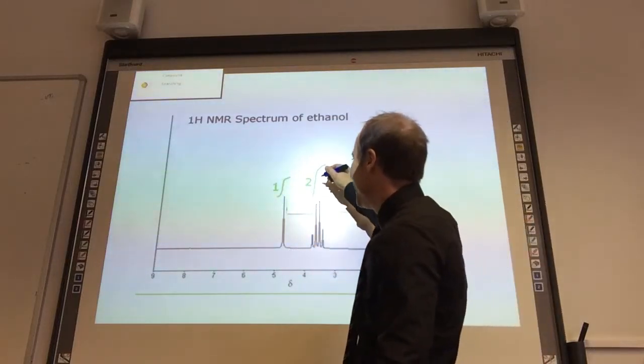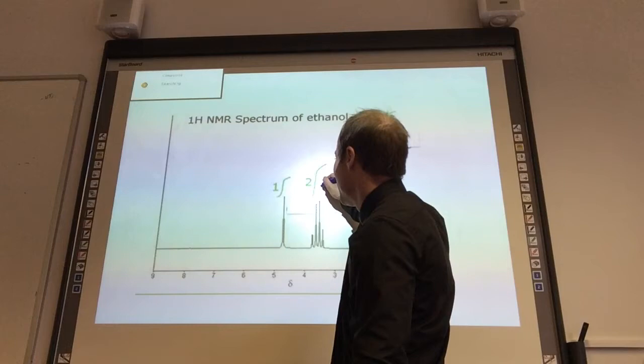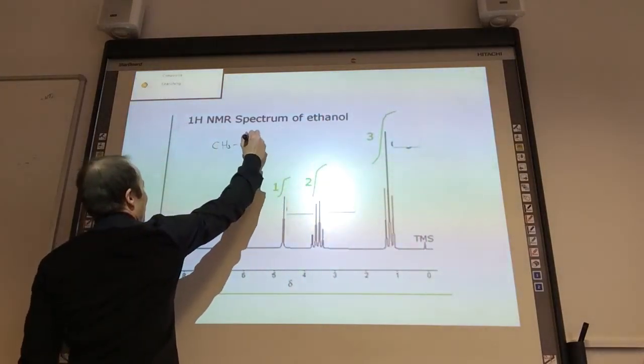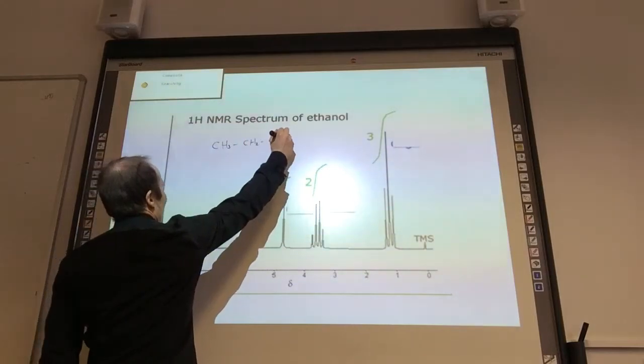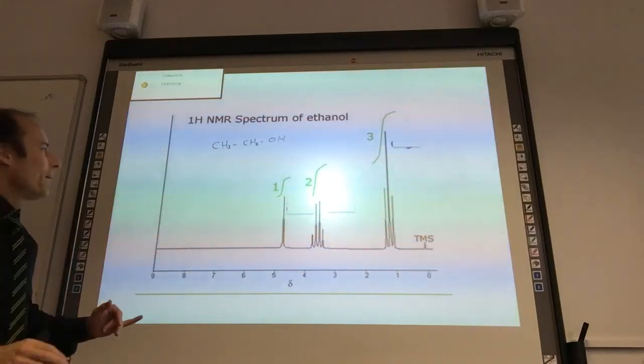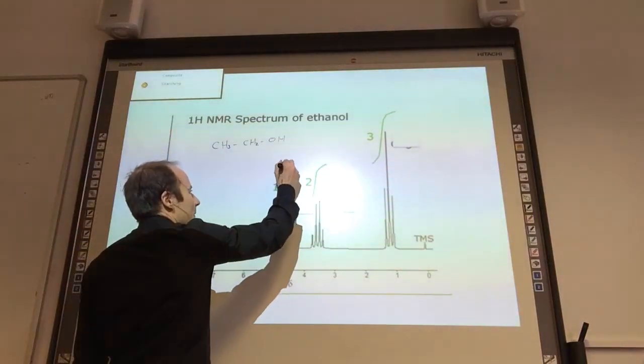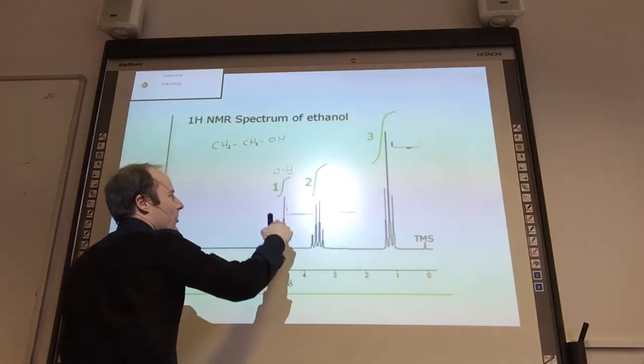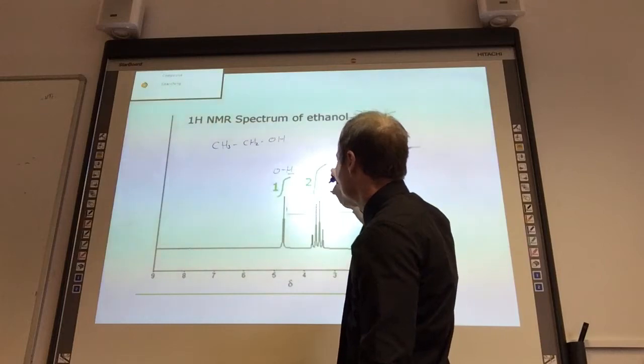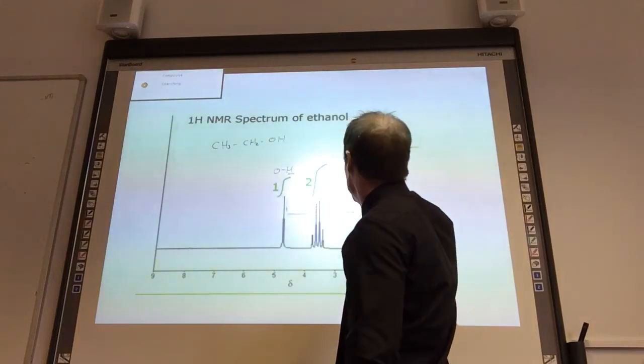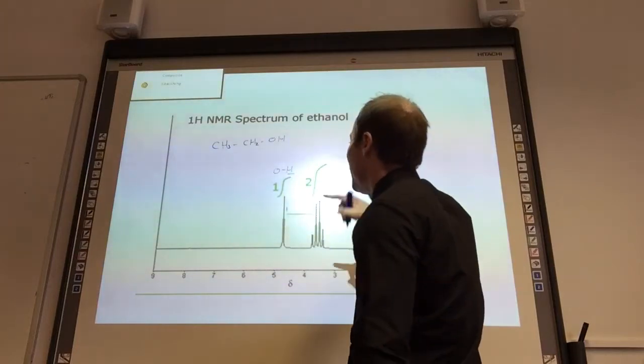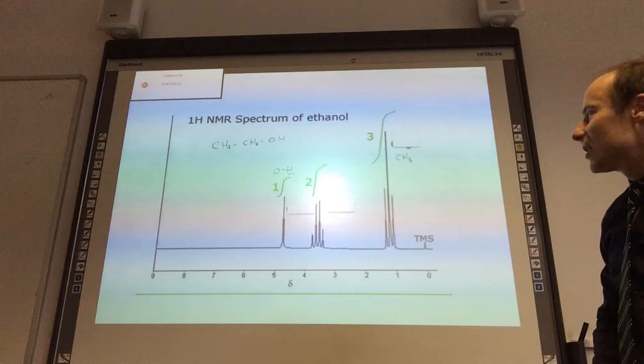Brilliant, so this one here is going to be... can we draw ethanol first? Let's put ethanol up. So I've got CH3, CH2, OH. Now I can assign this purely based on intensity. This one here is going to be my OH. This one here is going to be the CH2 group, and the final one at the end is going to be my CH3 group.